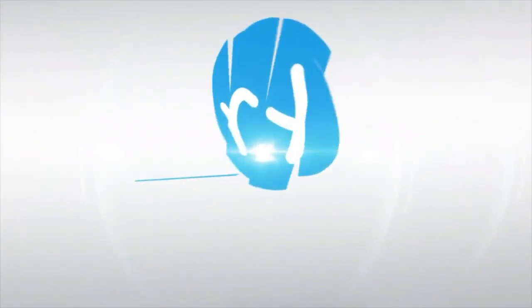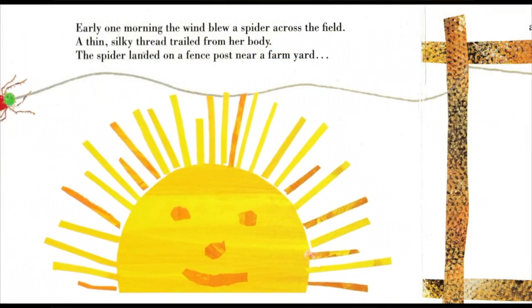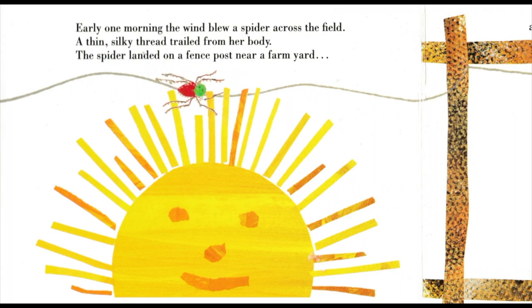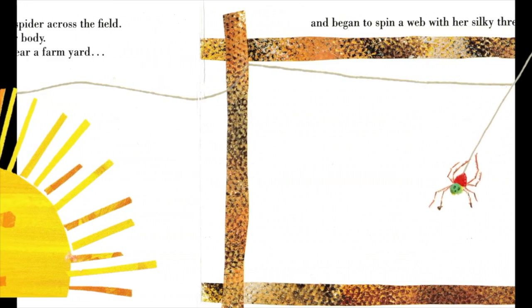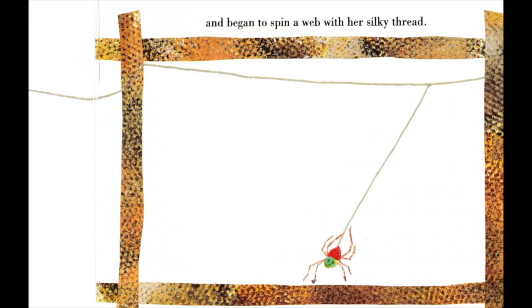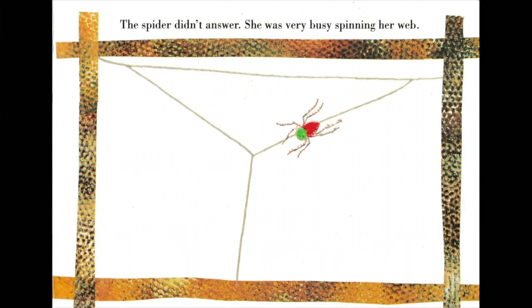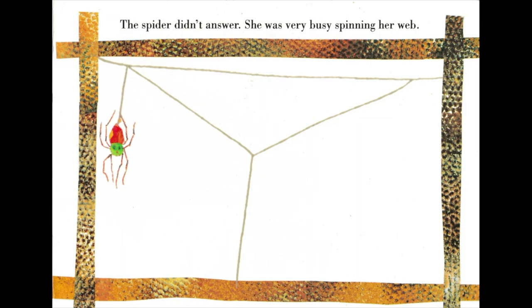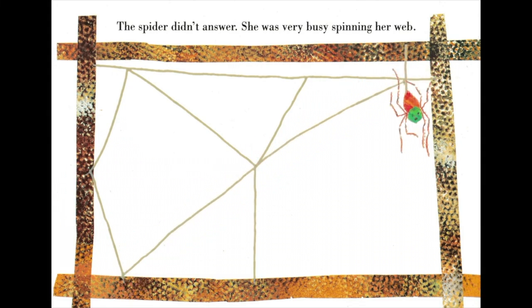Do you have your slider ready to go? Thumbs up if you have it. Awesome. Let's listen to the story together. The Very Busy Spider by Eric Carle. Early one morning, the wind blew a spider across the field. A thin, silky thread trailed from her body. The spider landed on a fence post near a farmyard and began to spin a web with her silky thread. Nay, nay, said the horse. Want to go for a ride? The spider didn't answer. She was very busy spinning her web. Moo, moo, moo, said the cow. Want to eat some grass? The spider didn't answer. She was very busy spinning her web.